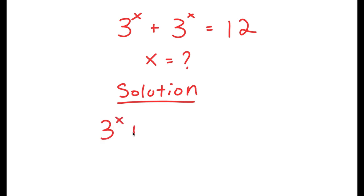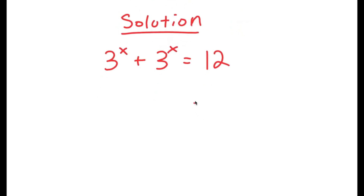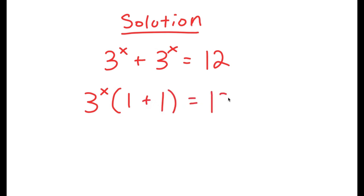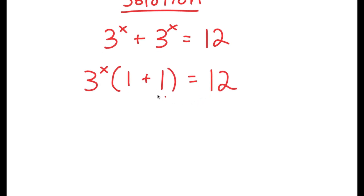I have 3 to the power of x plus 3 to the power of x is equal to 12. What I'm first going to do is factor out 3 to the power of x. So I get 3 to the power of x times 1 plus 1 is equal to 12. Now, 1 plus 1 is 2, so I get 3 to the power of x times 2 is equal to 12.